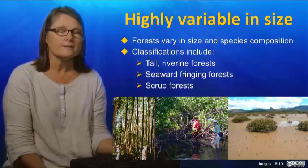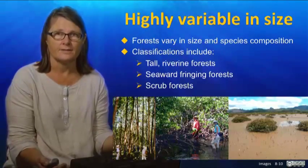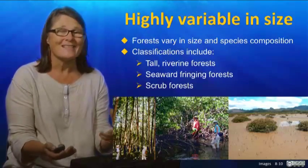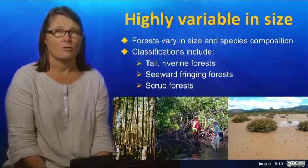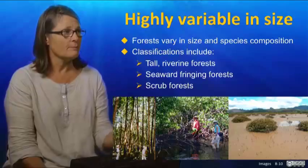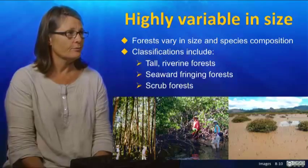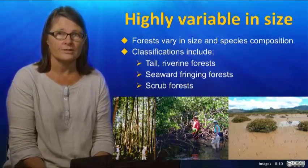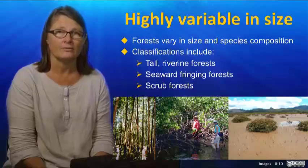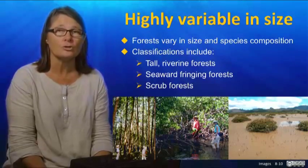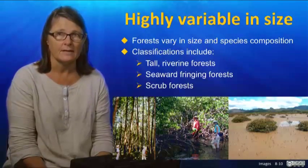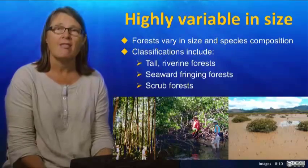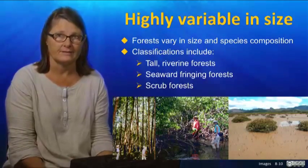These forests are highly variable in size and species composition. The first picture shows a very tall forest from the north of Australia in the Daintree River, where the trees reach 30 metres. In some estuarine areas they can be even larger than this.